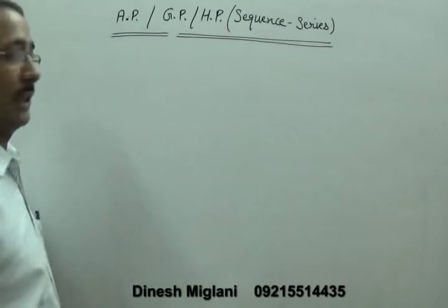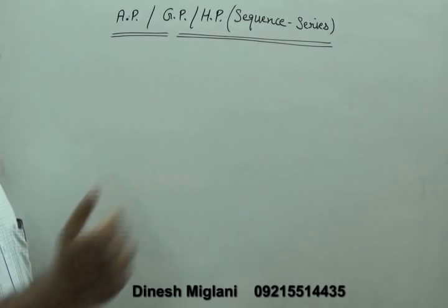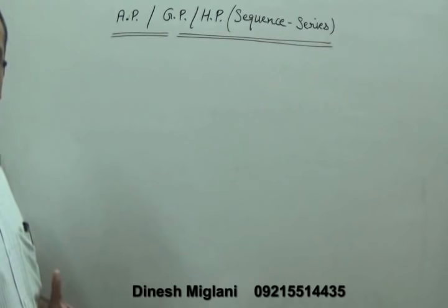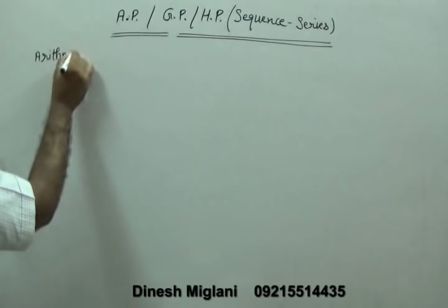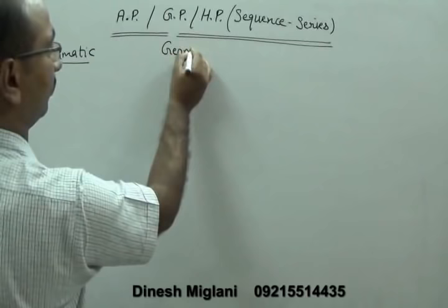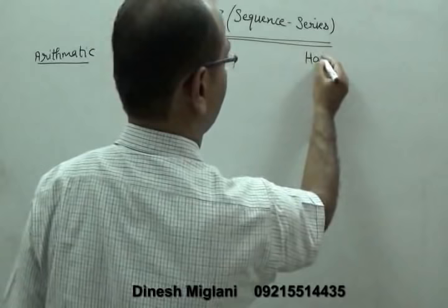In this chapter we are going to understand three progressions: AP, GP, and HP. First, I am going to start with a comparative study between AP, GP, and HP so that you can easily understand the basic formulas required and the differences between them. AP stands for Arithmetic Progression, GP stands for Geometric Progression, and HP stands for Harmonic Progression.